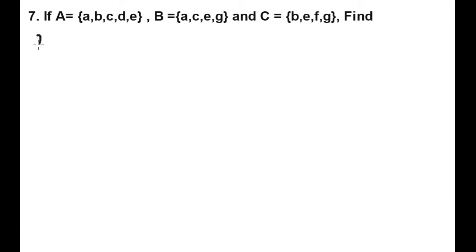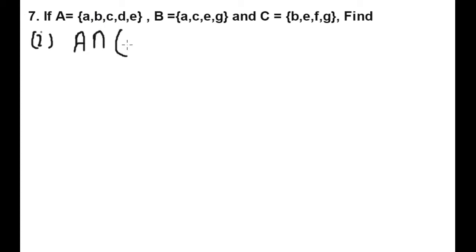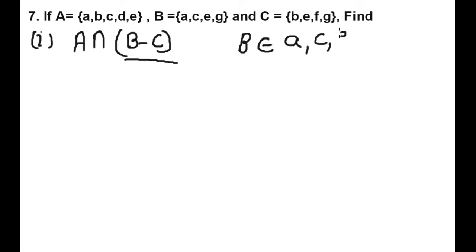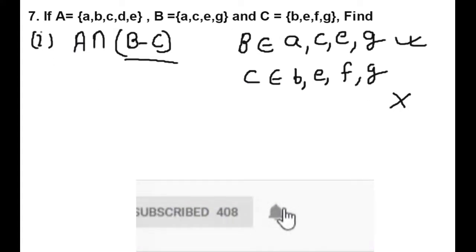First is A intersection (B minus C). So first of all we will solve B minus C. For that, first we will write the elements of B. Now we will find the elements which are only available in B.